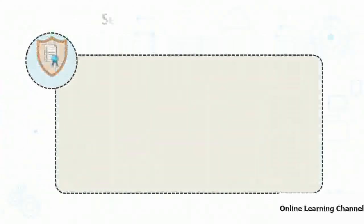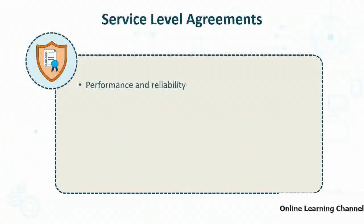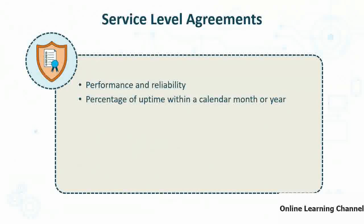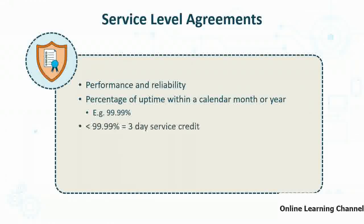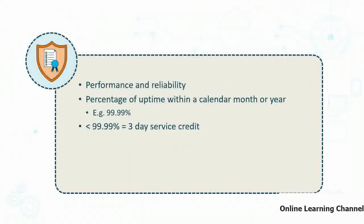SLAs are all about performance and reliability. There is always a percentage of uptime specified within the SLA for a calendar month or year. For example, the SLA might guarantee 99.99% uptime. If uptime falls below that, you might receive a three-day service credit for future Azure costs. If it drops below 95%, you might get a seven-day service credit.